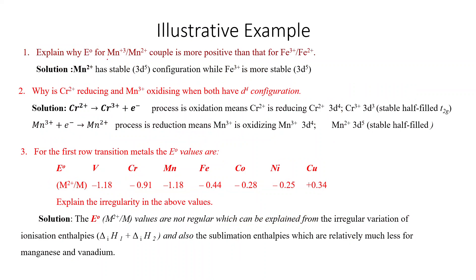Zinc also shows only one oxidation state (+2), but zinc is not a transition element, so our answer remains scandium. Next: why is the E° for the Mn3+/Mn2+ couple more positive than for the Fe3+/Fe2+ couple? Mn2+ has a stable 3d⁵ configuration, so the Mn3+/Mn2+ E° is more positive — more positive means Mn3+ readily converts to the more stable Mn2+.